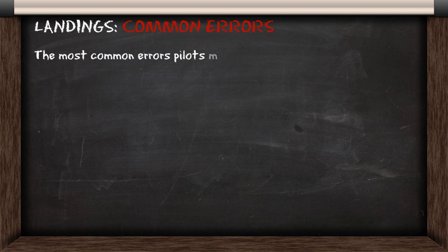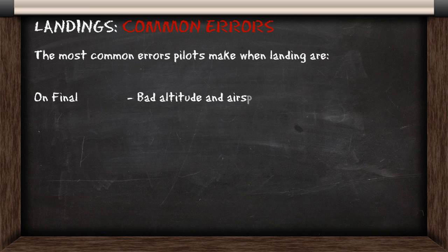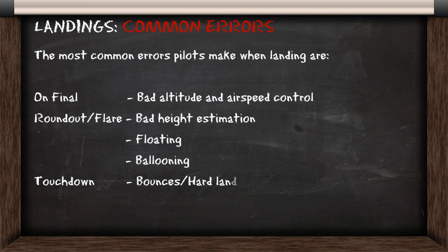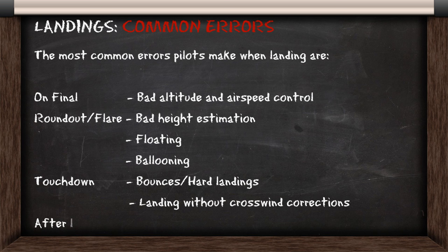The most common errors pilots make when landing are bad altitude and airspeed control, bad height estimation, floating, ballooning, bounces with hard landings, landings without crosswind corrections, and ground looping.